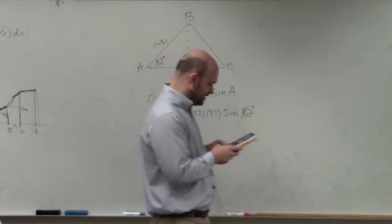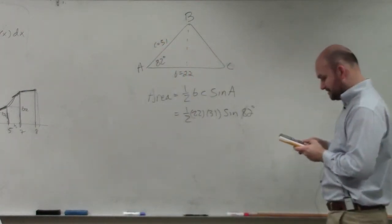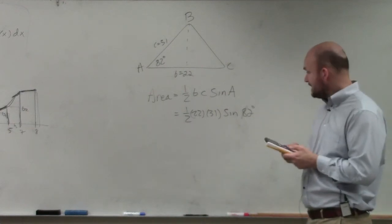And then you can just type this on your calculator: 0.5 times 22 times 31 times the sine of 82.